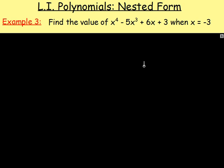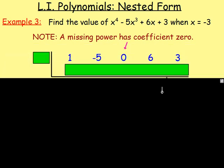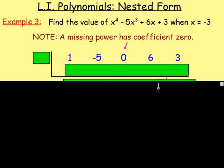Example number 3: Find the value of x to the power of 4, minus 5x cubed, plus 6x, plus 3, when x is negative 3. Now, there is something different about this one. With this one here, you'll notice there's no x squared term. It goes x to the power of 4, x to the power of 3, there's no x squared, and then it goes to x, and then just your number on the end. However, you still have to include your x squared. If there's a missing power, then you would say the coefficient is 0. So you still have to include that in your L shape when you're using your nested form.